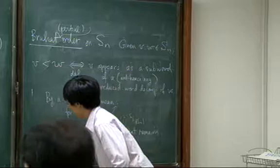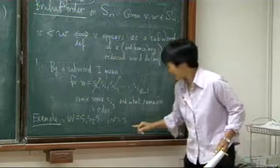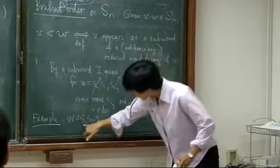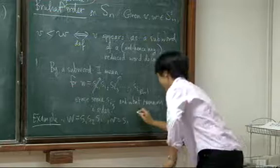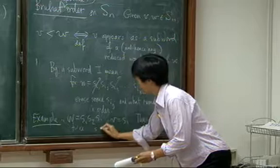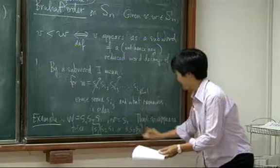So if W is S1, S2, S1, and if V is S1, then I will say V appears as a subword of W in two different ways. I can erase this S2 and this S1 and look at the remaining S1, or I can erase this S1 and this S2 and look at the remaining S1. Then V appears twice. S1, S2, S1. So my notation will be to circle this in a yellow box, or circle that one in a yellow box, and throw away the others. Does that make sense?